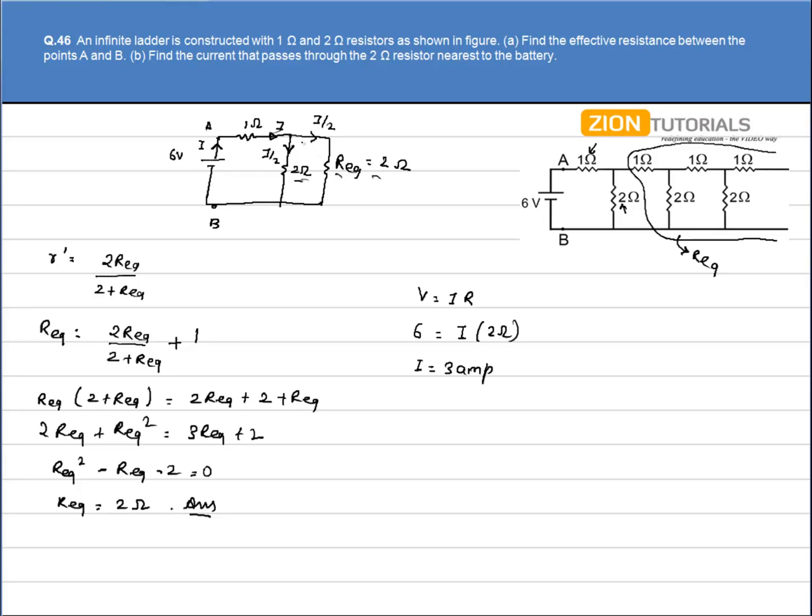So the current that passes through the 2 ohm resistor will be equal to I by 2 that is 3 by 2 that is 1.5 ampere. That is the answer.